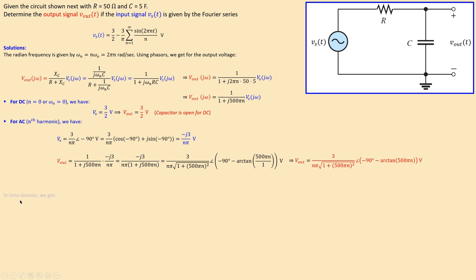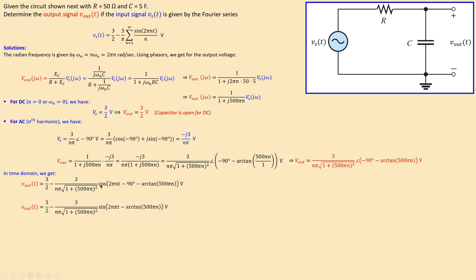We can then convert V_out into the time domain using the amplitude and phase in a cosine template: amplitude × cos(2πnt + phase). The frequency expression 2πnt comes directly from the input. Since cosine with −90° equals sine, we can simplify this to a sine expression. This gives us the AC component of V_out in simplified form.